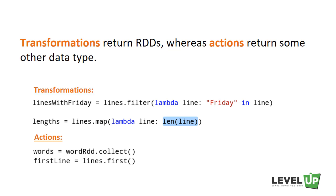If you are ever confused whether a given function is a transformation or an action, you can look at its return type. Transformations return RDDs, whereas actions return some other data type. This is a quite useful tip to tell if an operation is a transformation or an action.